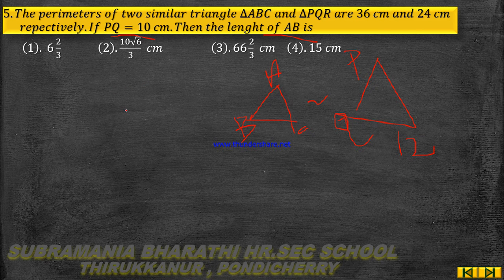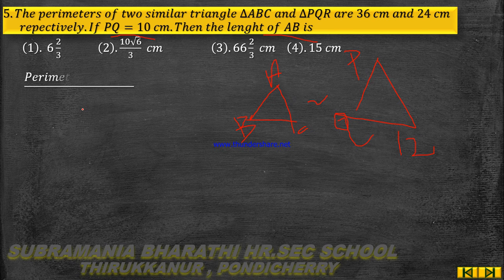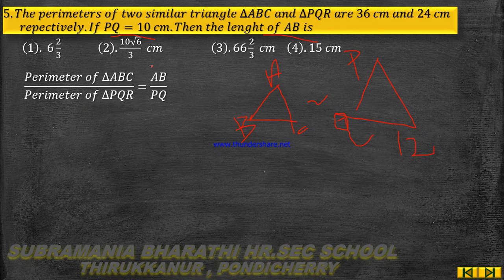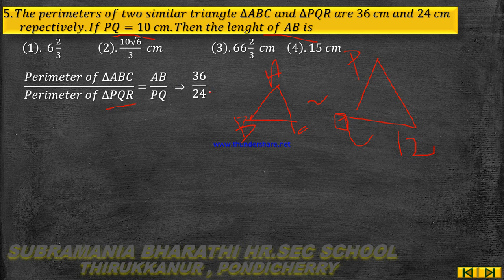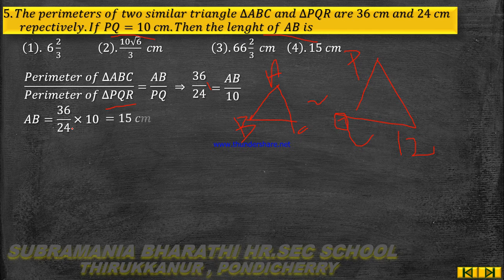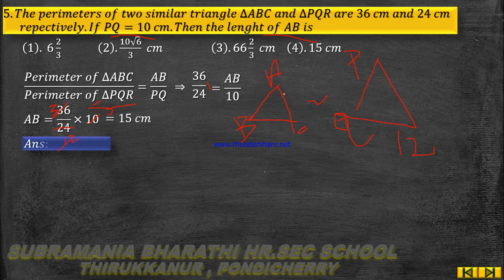Perimeter of triangle ABC divided by perimeter of triangle PQR equals AB by PQ. So perimeter of triangle ABC is 36, perimeter of triangle PQR is 24, and this equals AB by 10. Cross multiplying: AB equals 36 into 10 divided by 24. Simplifying: 3 times 5 equals 15. So the answer is 15 cm — option 4 is the correct answer.